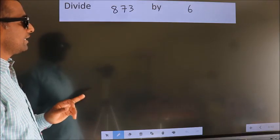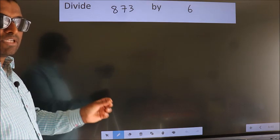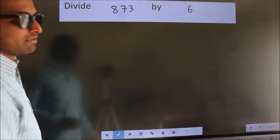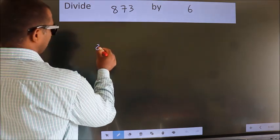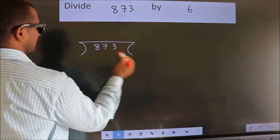Divide 873 by 6. To do this division, we should frame it in this way. 873 here, 6 here.